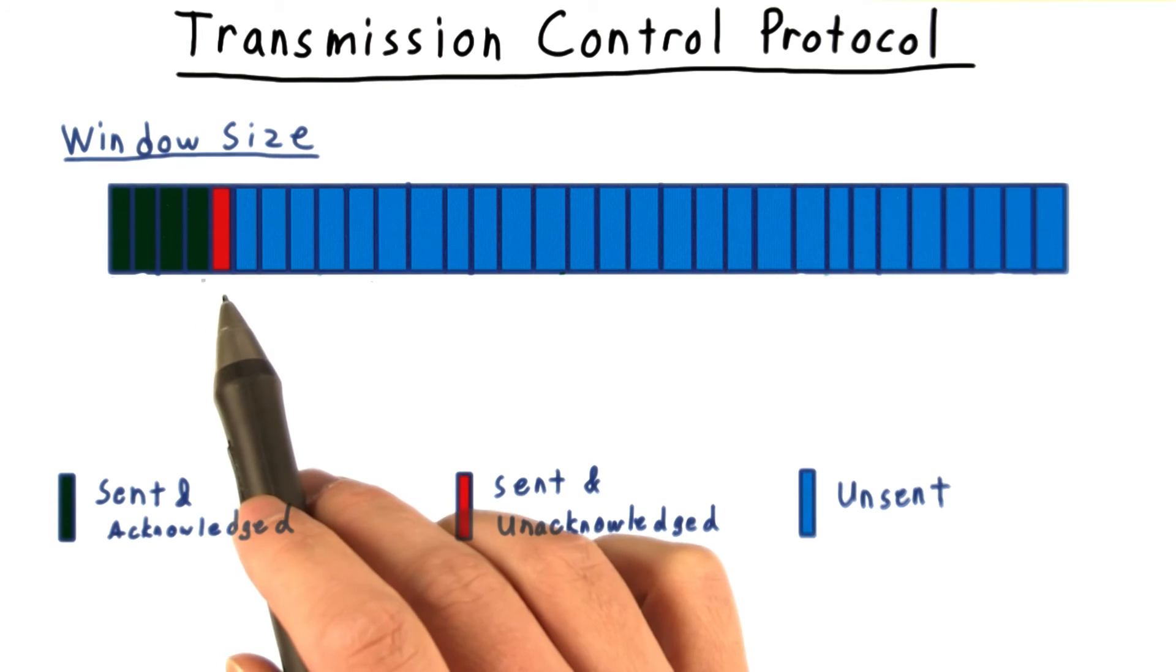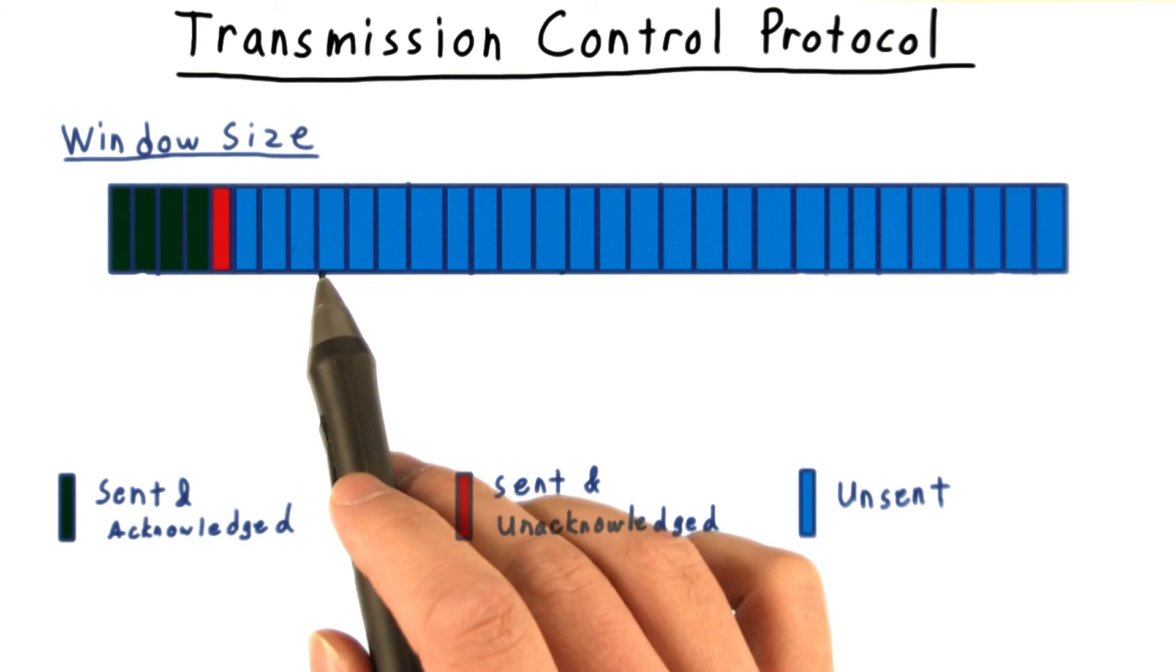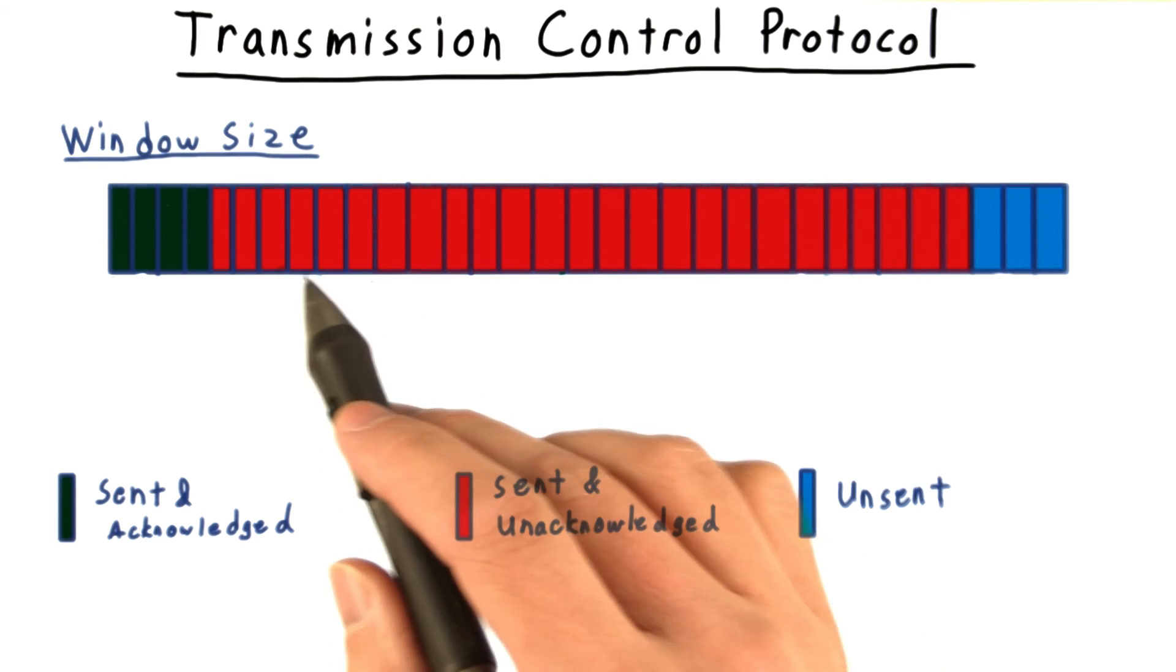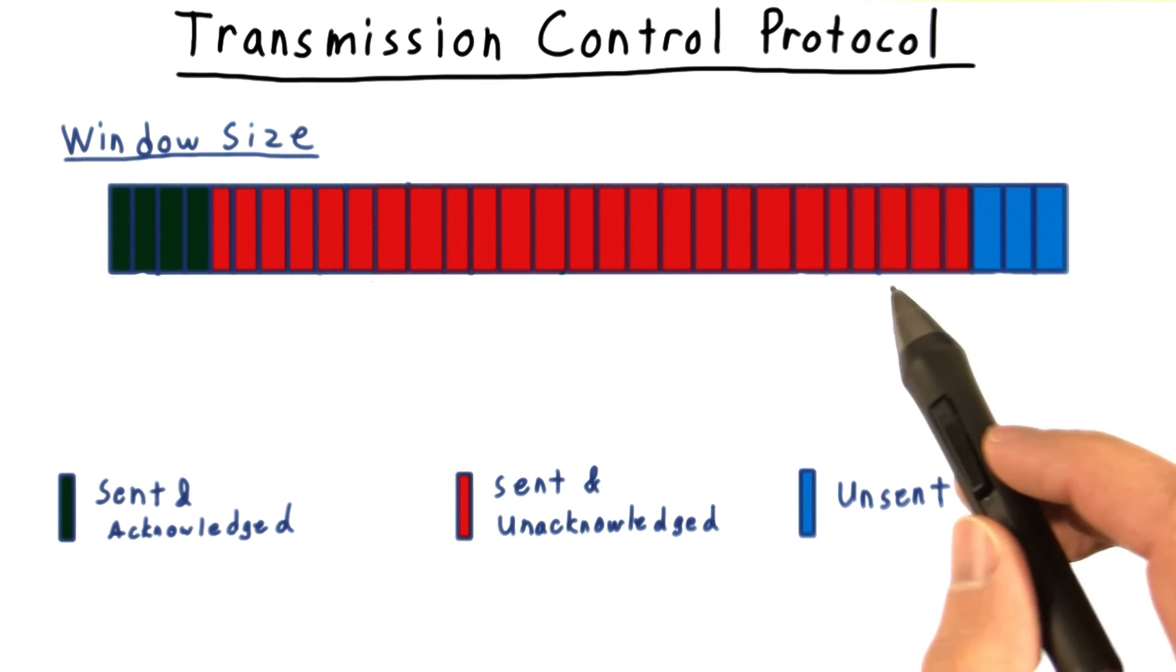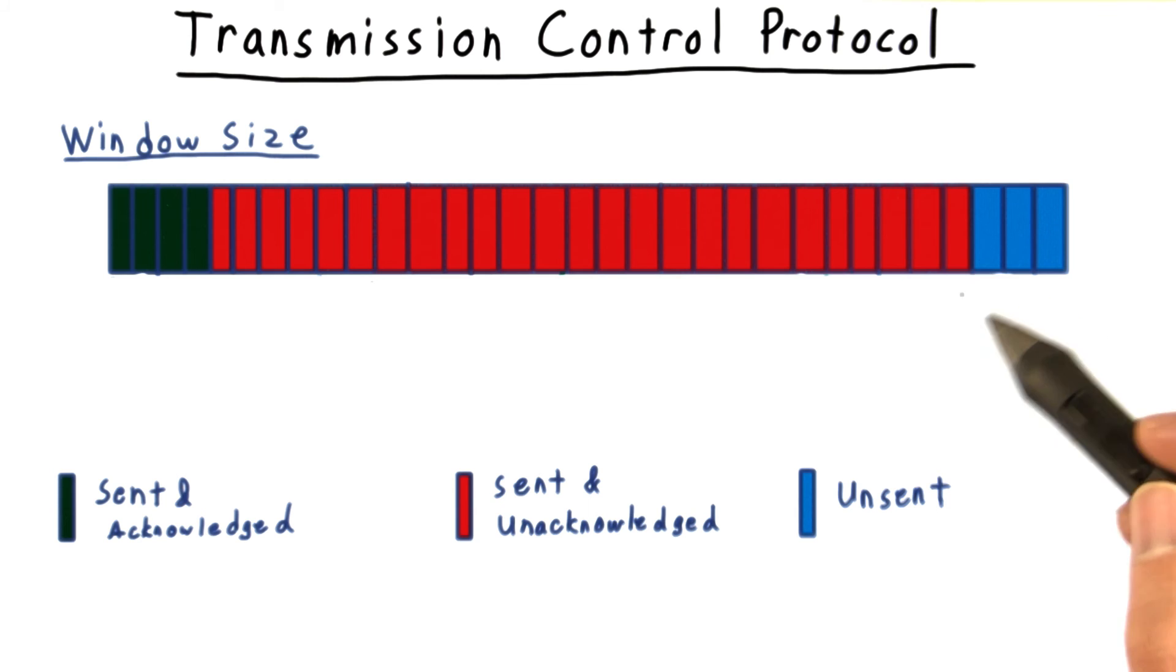If the window is too small, then it can slow the connection down, as the sender has to stop and wait for an acknowledgement for every packet. If the window size is too big, then there's a risk that it will overflow the buffers of the recipient, or of one of the hops along the way, resulting in packet loss. So it's important to get the window size right.